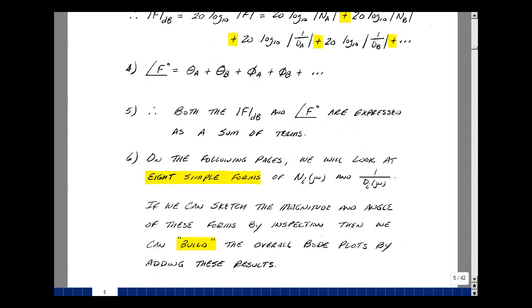Our magnitude as well as our angle is found by adding up these individual terms. So we could find the overall magnitude and angle by adding up the graphs of each term plotted individually.